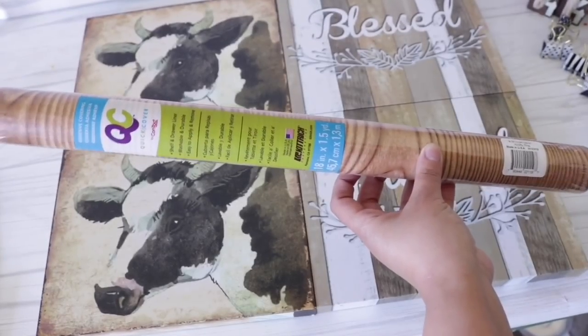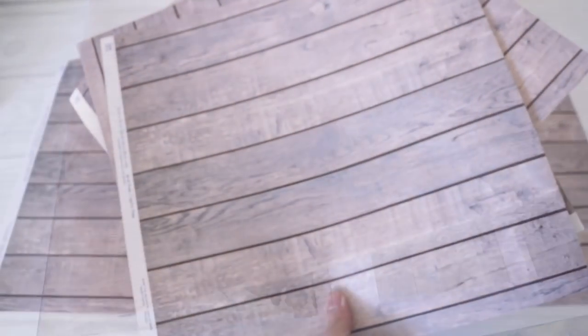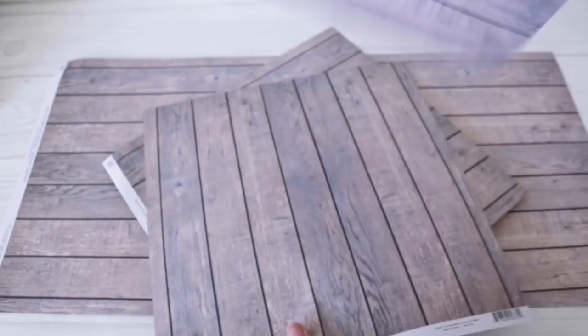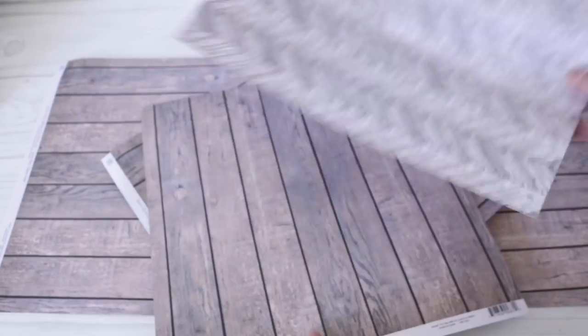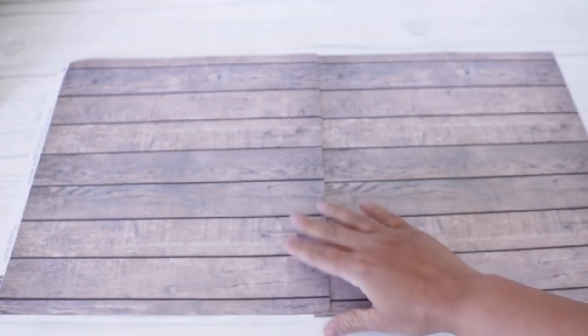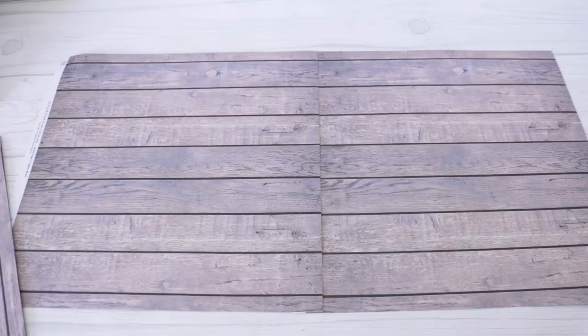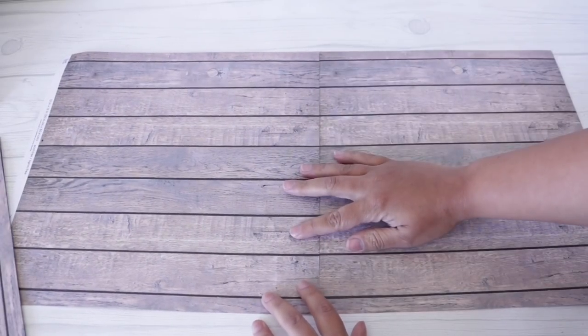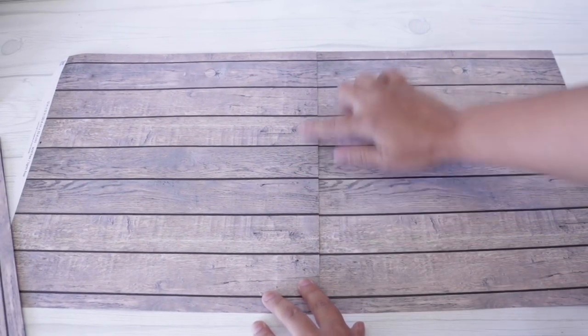You can cover this with whatever you want. Dollar Tree has wood grain contact paper, but I don't love how it looks. So I got this six for a dollar at Joanne. They were on clearance, and I love that they're reversible. So you have two options. And what I'm going to do is I am going to attach four of them together.